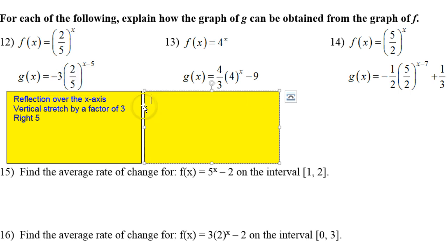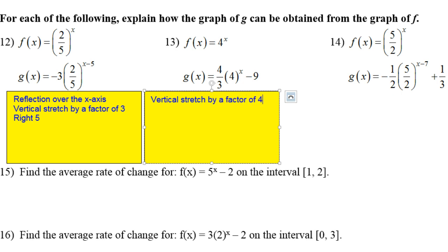Now let's see what's the deal here. So the 4 over 3 in the front — if this is bigger than 1 it will be a vertical stretch; if it's less than 1 it will be a vertical compression. This is a vertical stretch by a factor of 4 over 3. 4 over 3 is bigger than 1 — see how the larger number is on top, that's an improper fraction.